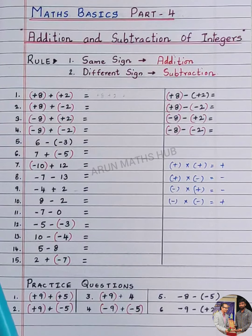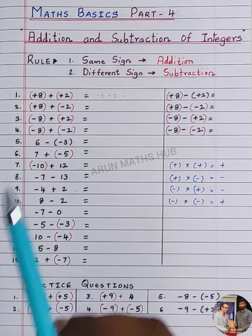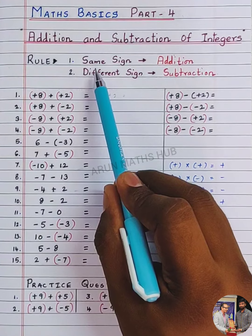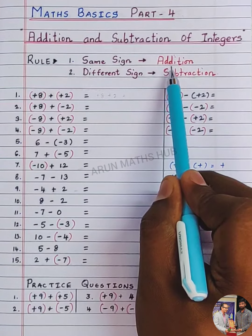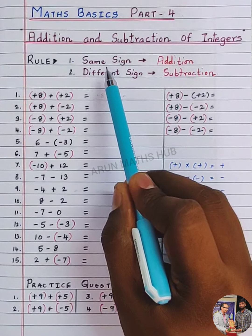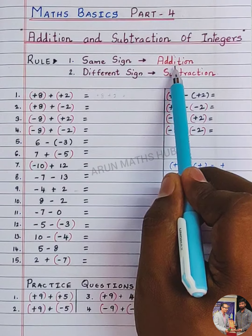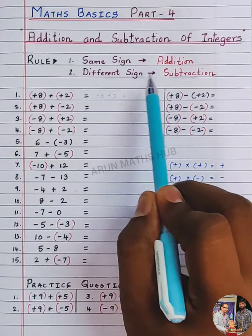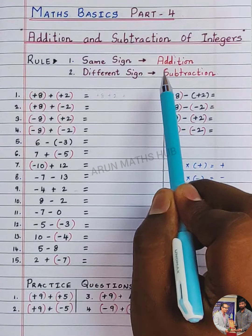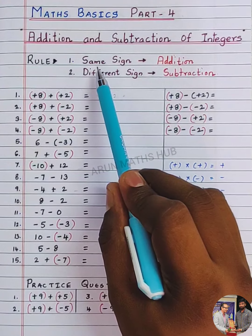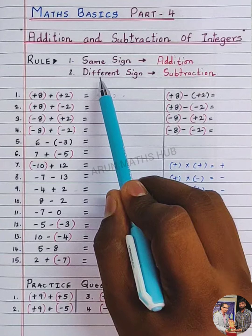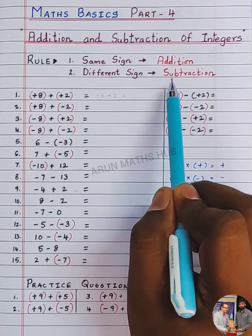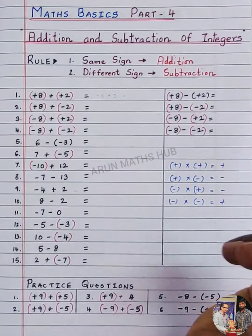Now, the basic two rules you must know: if you are adding integers with the same sign, you do addition. Integers with the same sign — addition. Integers with different sign — subtraction. I will repeat: integers with same sign, you do addition; integers with different sign, you do subtraction.